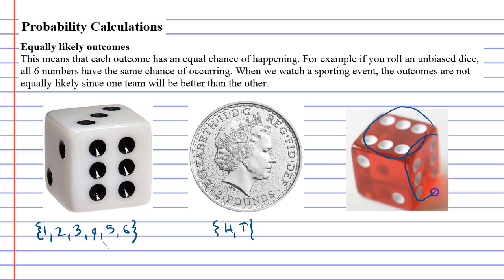The sixes have a better chance of happening than whatever numbers are on this dice. Usually when you have things such as coins or dice or anything like that, these usually represent equally likely outcomes.